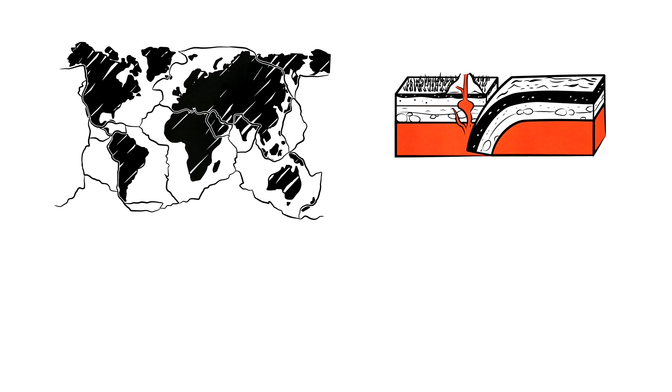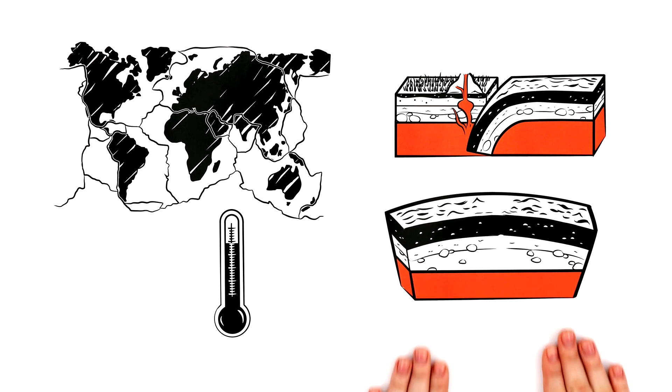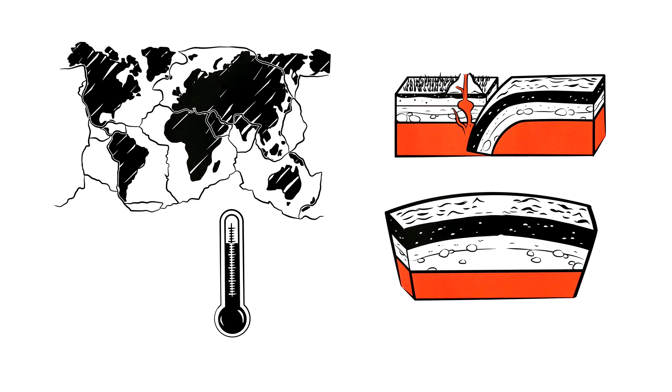But there are also volcanoes in the middle of tectonic plates. These occur when the heat concentration in the Earth's mantle is particularly high in one place. Here, hot material rises from inside the Earth and slowly melts the Earth's crust. Geologists call these areas hot spots.